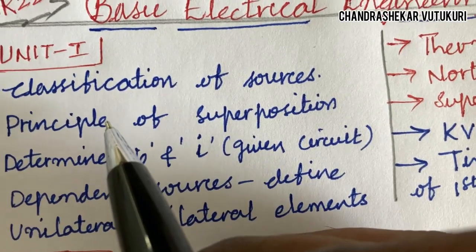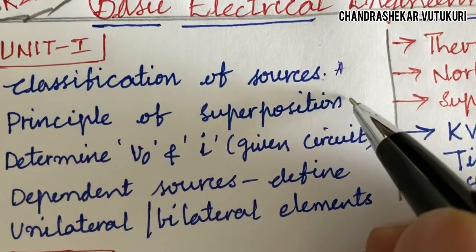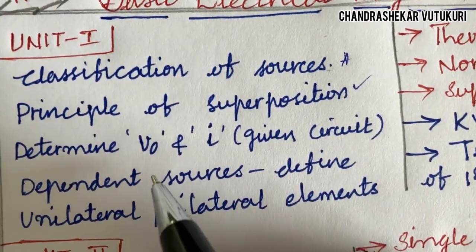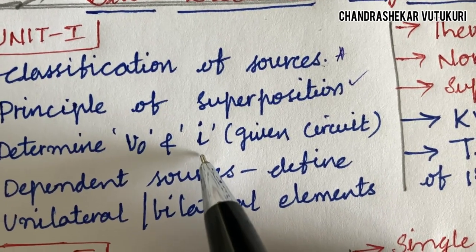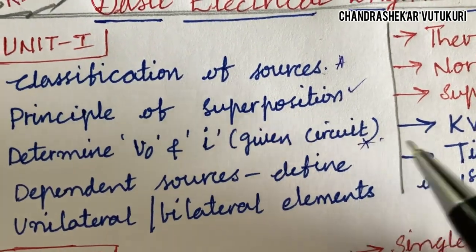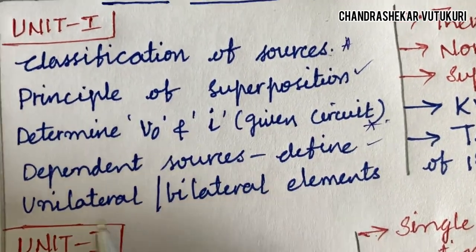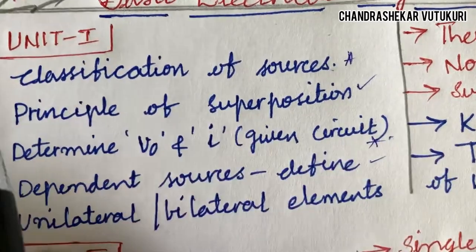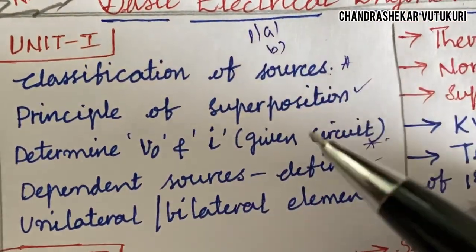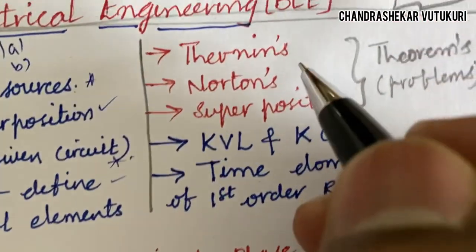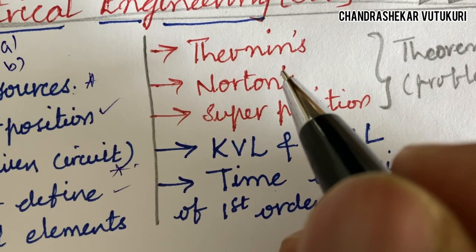The first short question I can give you is the classification of sources and the principle of superposition, which may also be a short question. Determine the voltage and the current for a given circuit diagram, dependent sources, and define unilateral and bilateral elements and their differences. These are all part of the 1A as well as 1B for DS students. Part A consists of short questions from A to J, and the long questions are from 2 to 6.